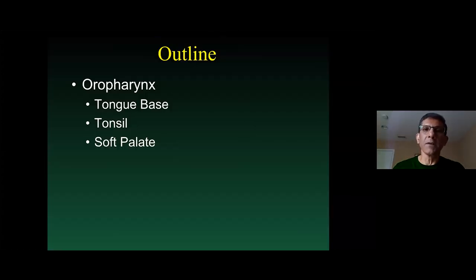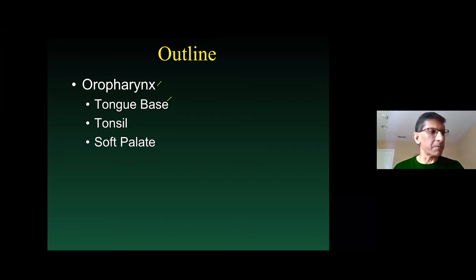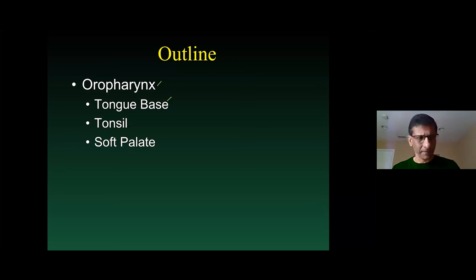So in summary for the oropharynx: tongue base — number one is squamous cell carcinoma, number two is lymphoma, number three is minor salivary gland tumor. Tonsil — number one is squamous cell carcinoma, number two is lymphoma. Soft palate — number one is squamous cell carcinoma, number two is minor salivary gland tumor. Now we're going to move on to the oral cavity.